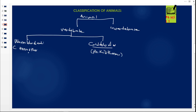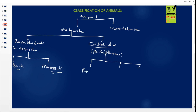Warm-blooded vertebrates are further classified into two classes: birds and mammals. Cold-blooded vertebrates — the poikilotherms — are classified into three classes: reptiles, fish, and amphibians. We will now look at each one in detail to understand why something is called a reptile, a fish, or an amphibian, and what makes each class different from the others.